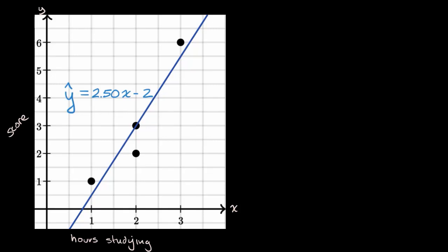We are interested in studying the relationship between the amount that folks study for a test and their score on a test, where the score is between zero and six. We're going to look at the people who took the tests and plot for each person the amount that they studied and their score. For example, this data point is someone who studied an hour and they got a one on the test.